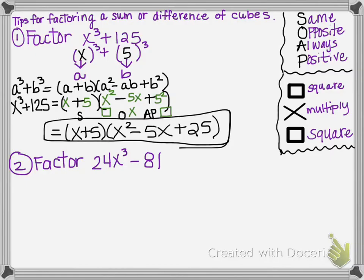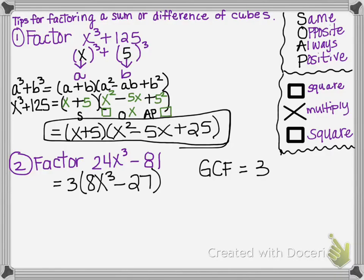Let's look at the next one. Now we have a minus, but 24 and 81 aren't perfect cubes, so we have to look further. Don't forget your basics — always scan your problem for a GCF. 24 and 81 share a GCF of 3. If I divide out the 3, that leaves me with 8x cubed minus 27. 8 is a perfect cube and 27 is a perfect cube, so 8x cubed means I had a 2x being cubed.